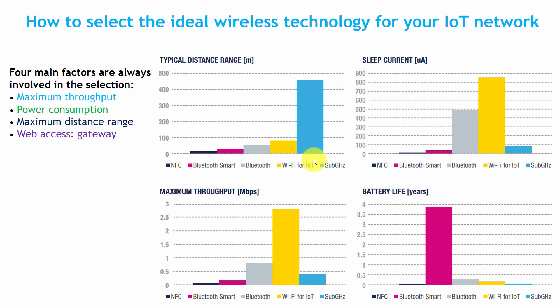Before that, we have to understand what are the 4 main factors which are always involved in the selection. These 4 factors are: maximum throughput, power consumption, maximum distance range, and web access — that is known as a gateway.